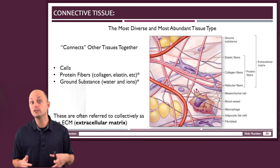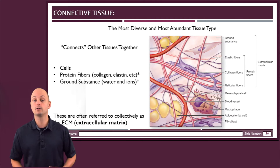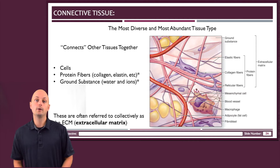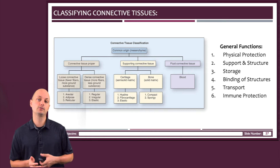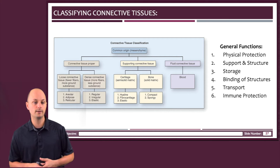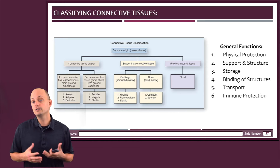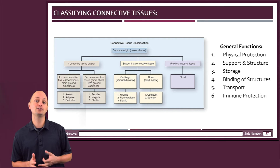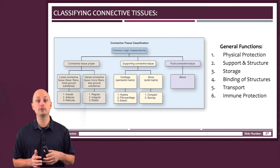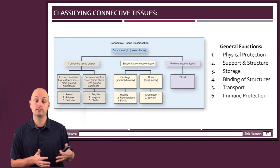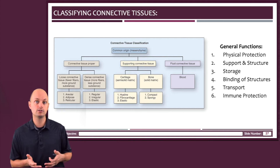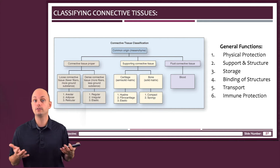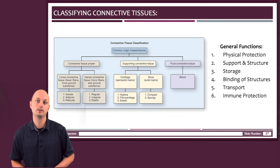Those proteins usually come from the cells that are within the tissue. Now because connective tissue is so diverse and so abundant, it's really difficult to come up with general functions to describe it. But if we wanted to try, we could say that connective tissues are responsible for physical protection as well as support, and that's because bone and cartilage are examples of supporting connective tissues.